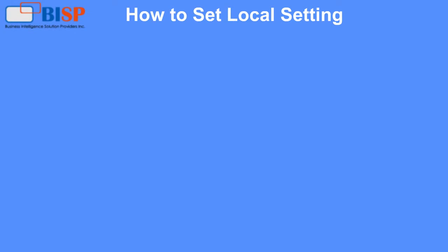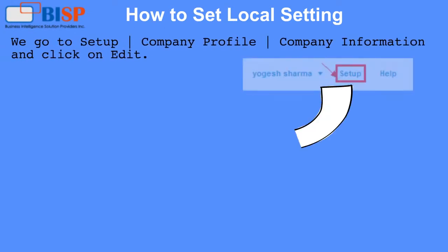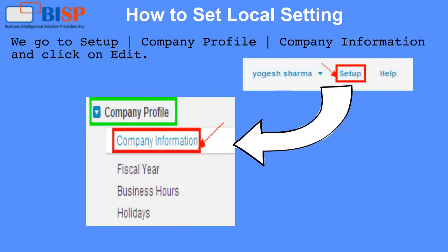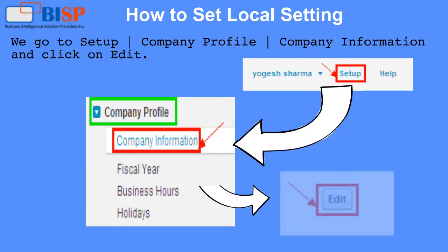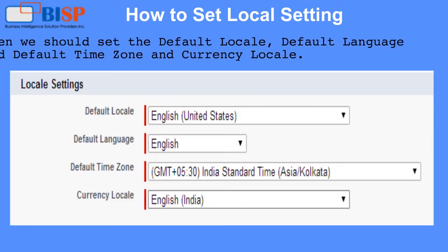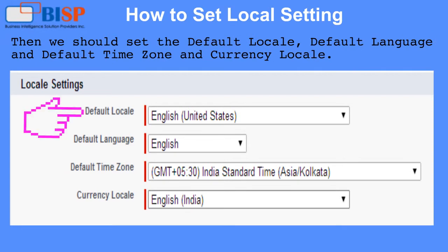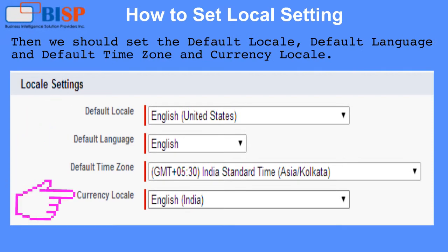How to set locale settings: Go to Setup, then Company Profile, then Company Information, and click on Edit. Then set the Default Locale, Default Language, Default Time Zone, and Currency Locale.